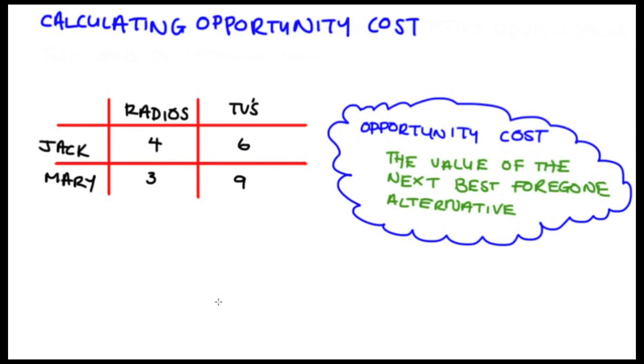Now in terms of thinking about opportunity cost, I've got the definition here: opportunity cost is the value of the next best forgone alternative. When we have examples like this with a couple of people or firms or countries and two goods, we're going to frame our statements of opportunity cost in terms of how much of one good we have to give up in order to make some amount of the other good.